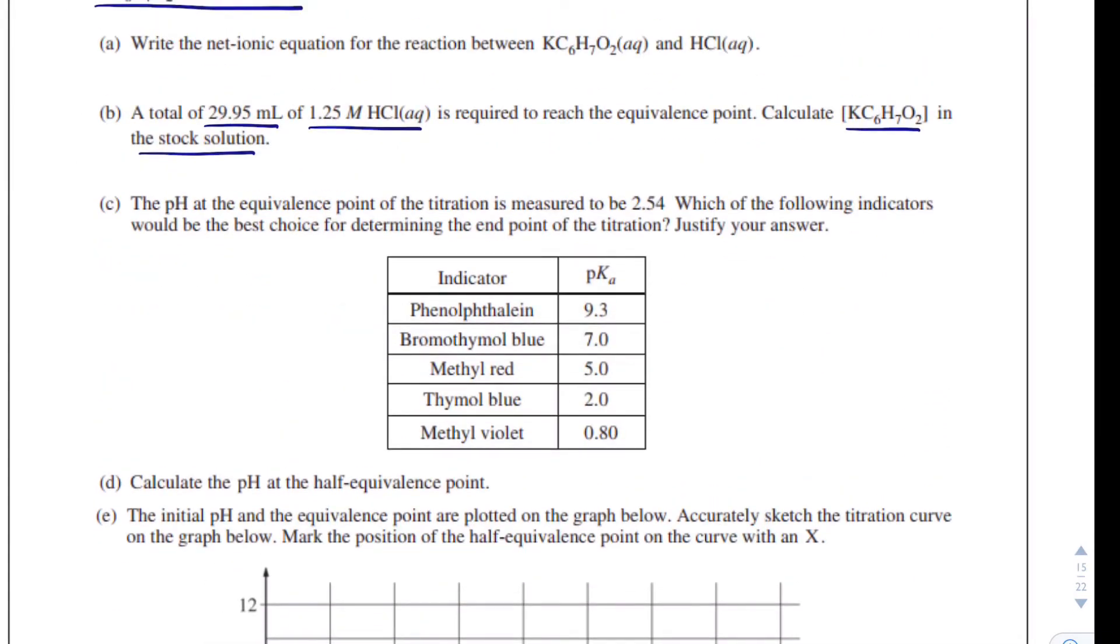Question C. The pH at the equivalence point of the titration is measured to be 2.54. Which of the following indicators would be the best choice for determining the endpoint of the titration? Justify your answer. So if you remember, the pKa of an indicator tells you the pH for when the indicator changes color.